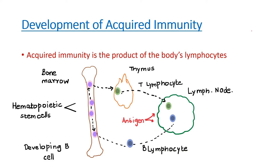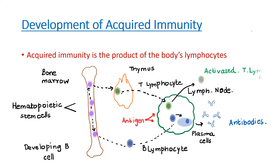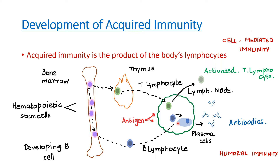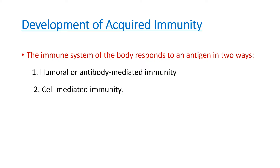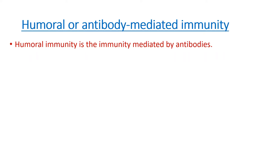When an antigen enters the body, B lymphocytes are activated to form plasma cells which produce antibodies — this is one method of response. The other method is that T lymphocytes are converted to activated T lymphocytes which can kill the antigen directly. These two responses are called humoral immunity and cell-mediated immunity. The immune system responds to antigen by either humoral or antibody-mediated immunity, or by cell-mediated immunity.